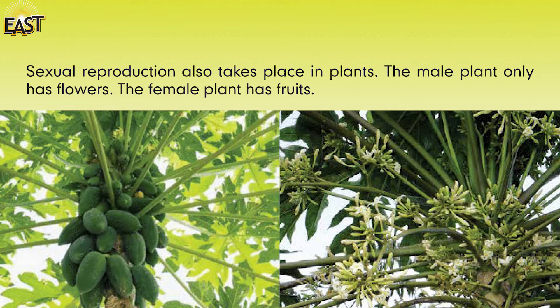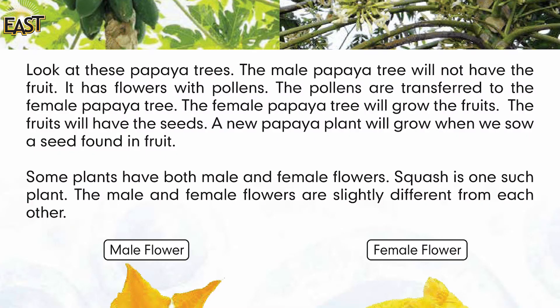Sexual reproduction also takes place in plants — repeat: sexual reproduction also takes place in plants. The male plant only has flowers; the female plant has fruits. Look at this example: the male papaya tree will not have fruit — it has flowers with pollens. The pollens are transferred to the female papaya tree.